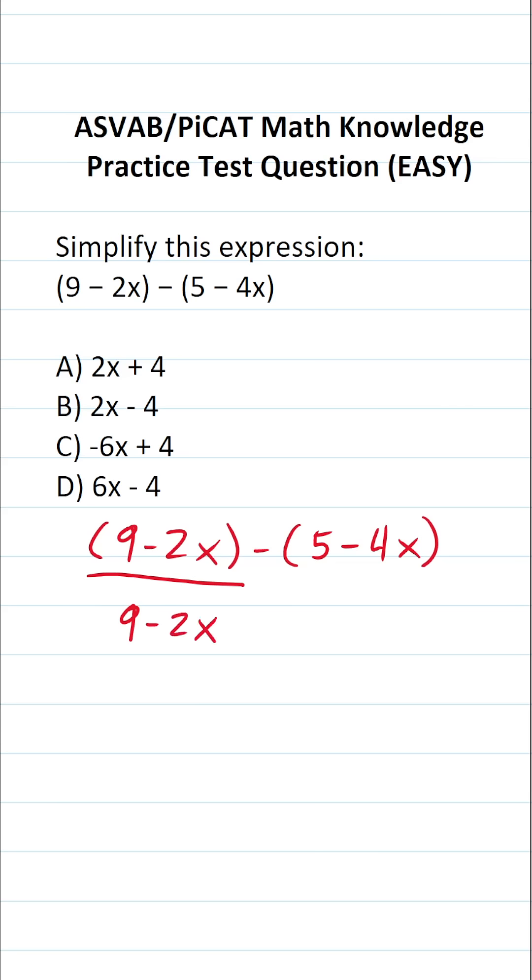In order to get rid of this second set of parentheses, that is 5 minus 4x, we have to take this negative and distribute it to each of the terms inside parentheses.